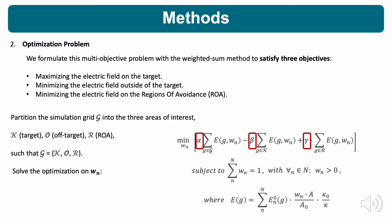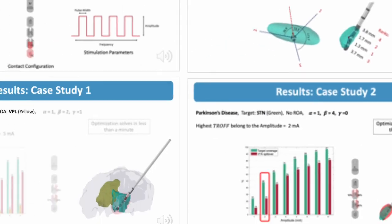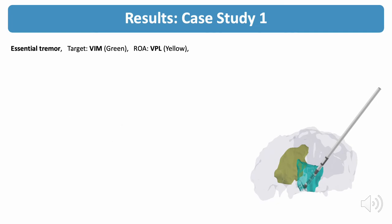We solved the optimization on two case studies. In case one, the electrode is right in the middle of the target, therefore we set similar weights for the three objectives. We solved the optimization on contact configuration while fixing the other parameters, and repeat this for different amplitude values.